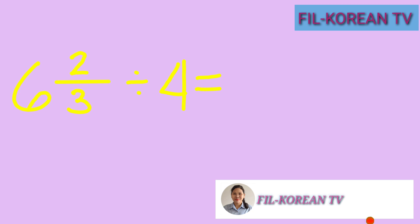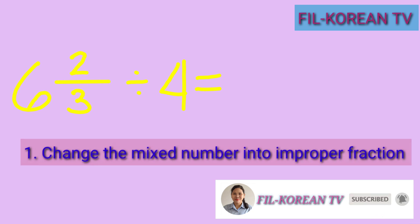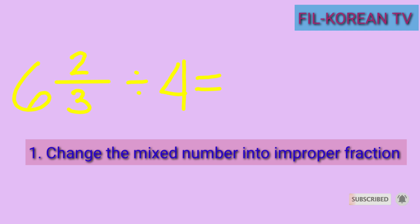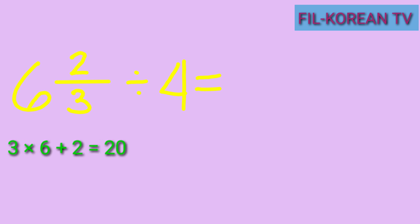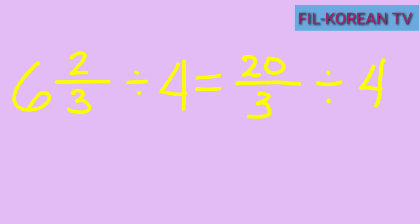This time we will divide a mixed number by a whole number. First step: change the mixed number into an improper fraction. Multiply the denominator by the whole number, then add the numerator. So 3 times 6 equals 18, plus 2 equals 20. So 20 is the new numerator, and the denominator stays as 3.